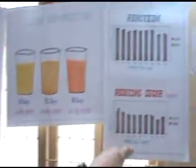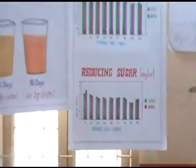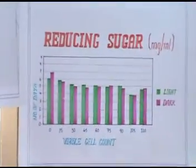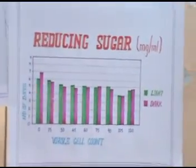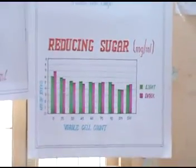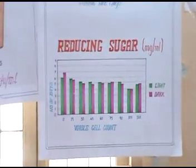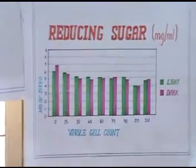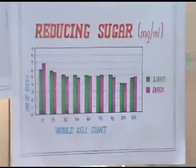There is a reduction in sugar content from 60 days to 90 days. This is important because if sugar content is present in the liquid biofertilizer, it damages the crop. If there is no sugar content, it gives good productivity to the crop.